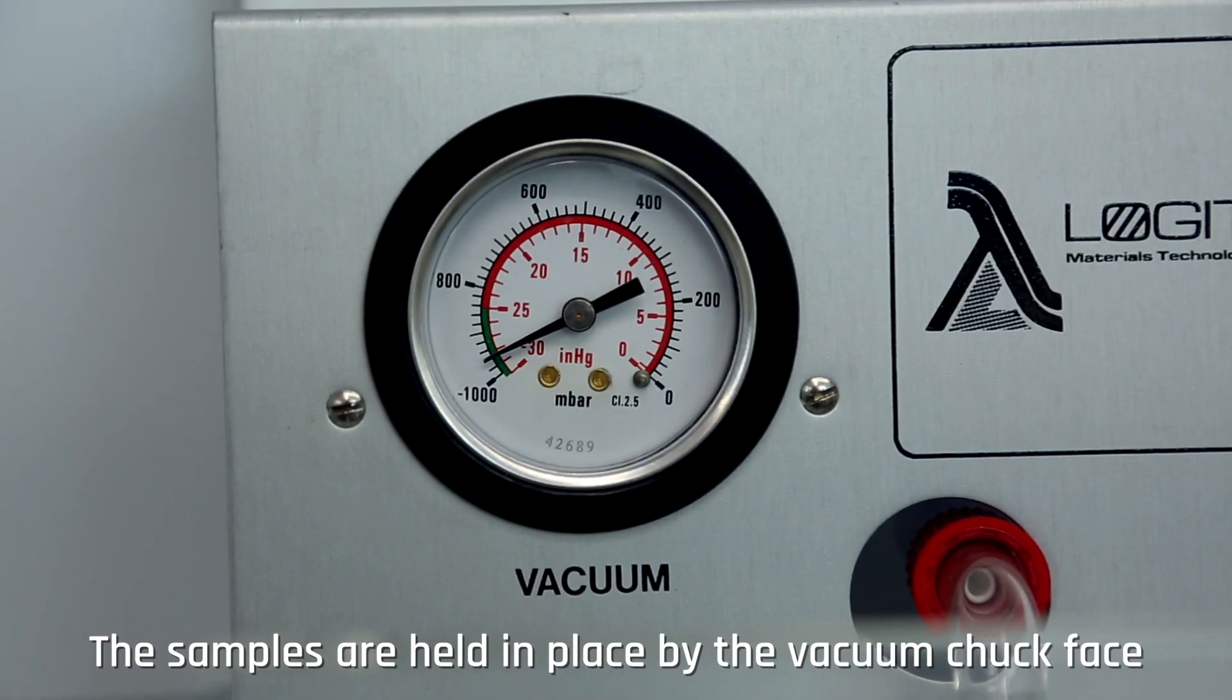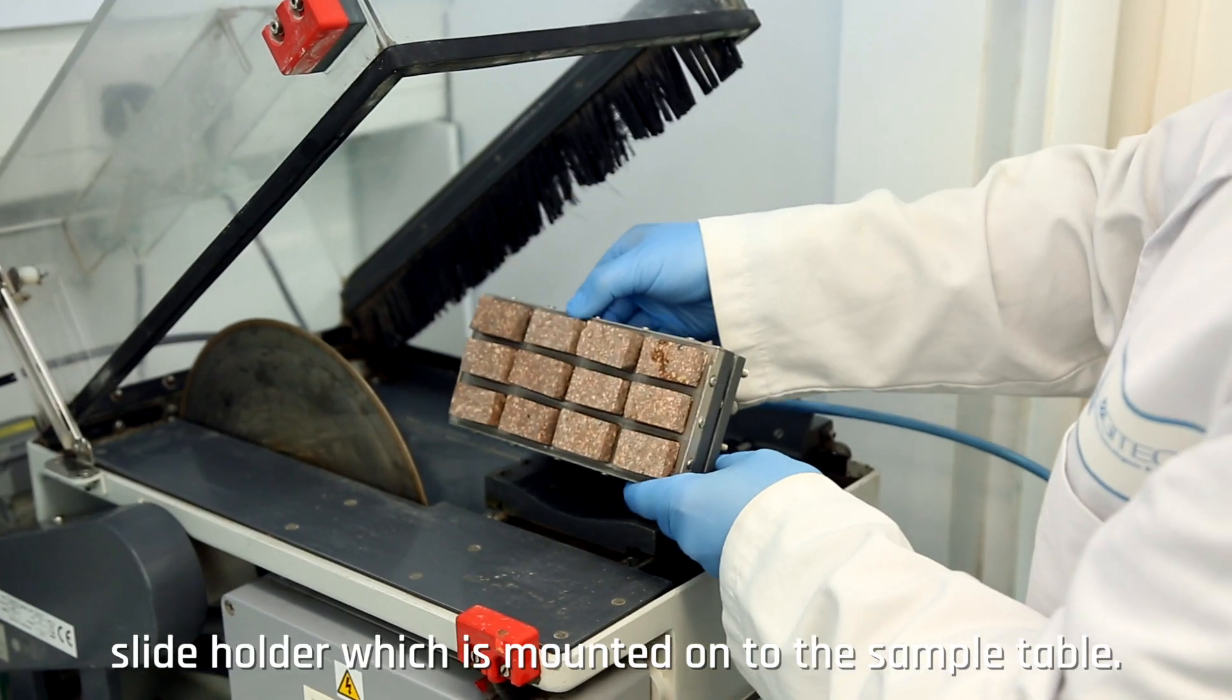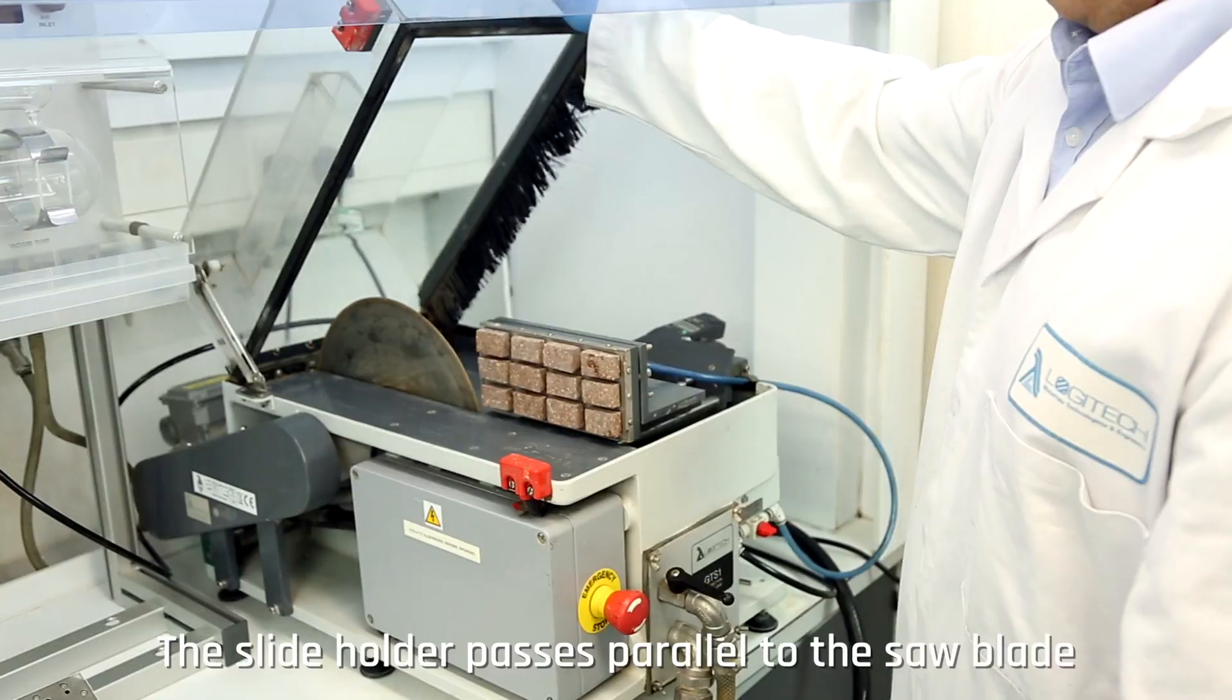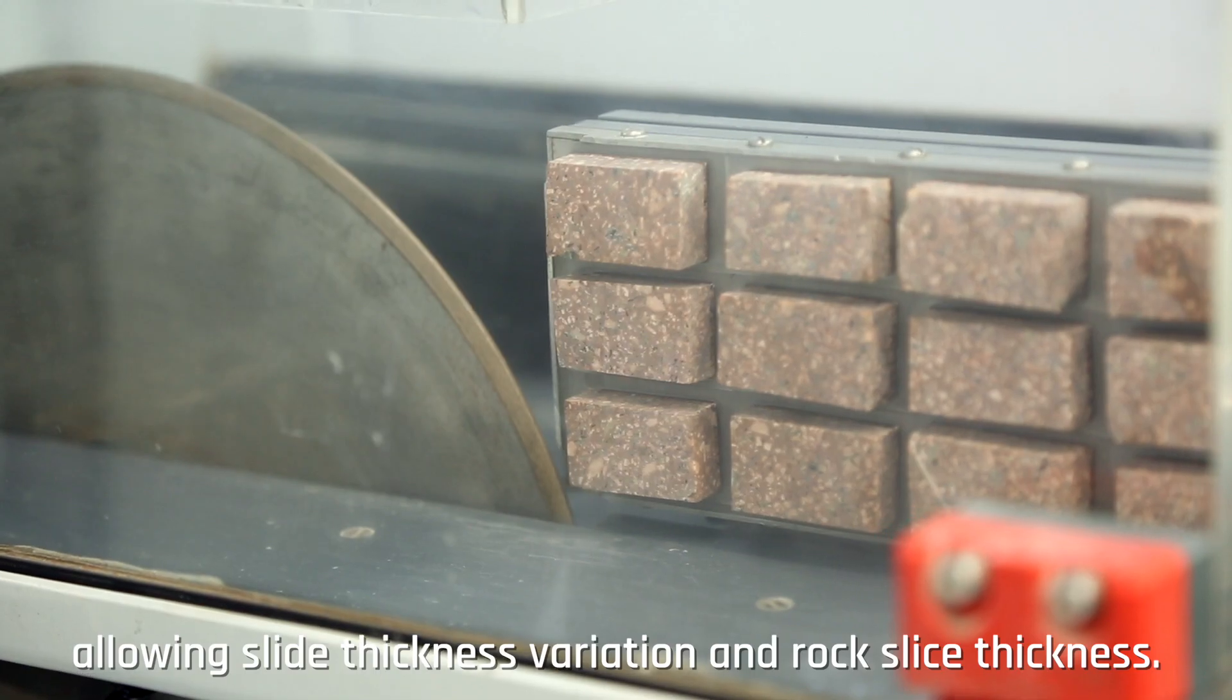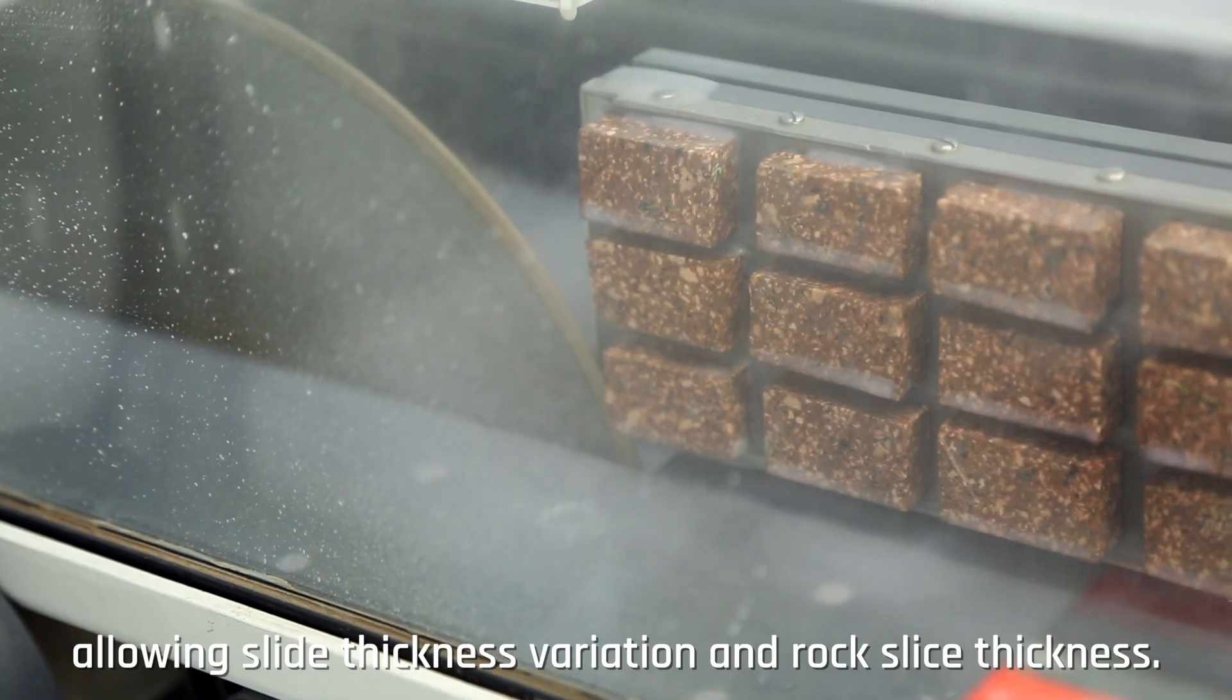The samples are held in place by the vacuum chuck face slide holder, which is mounted onto the sample table. The slide holder passes parallel to the saw blade at a user-adjustable distance, allowing slide thickness variation and rock slice thickness.